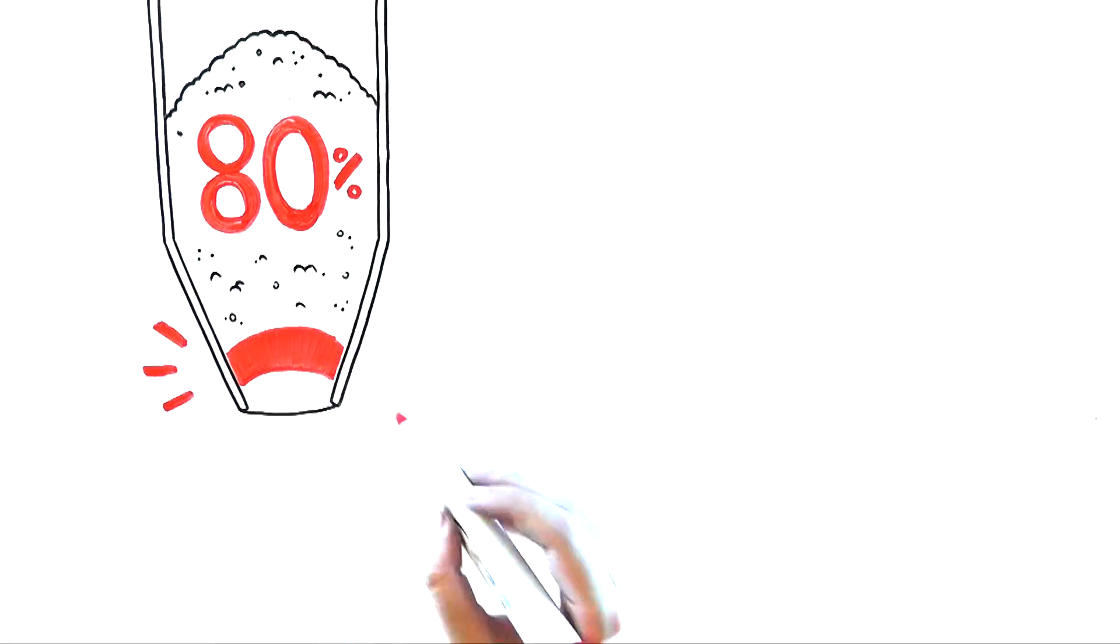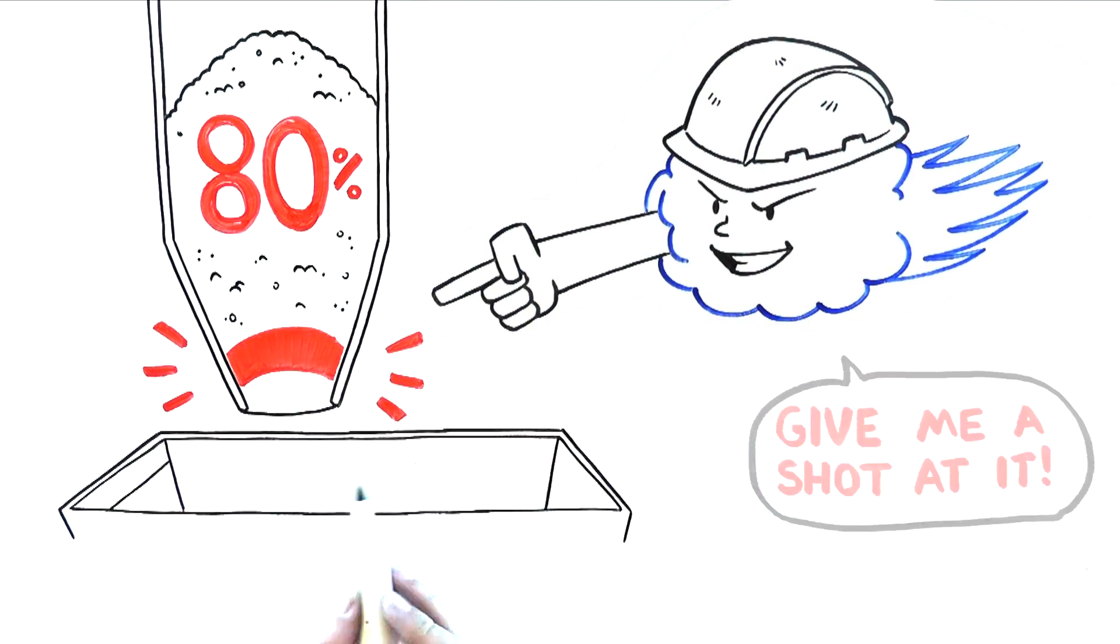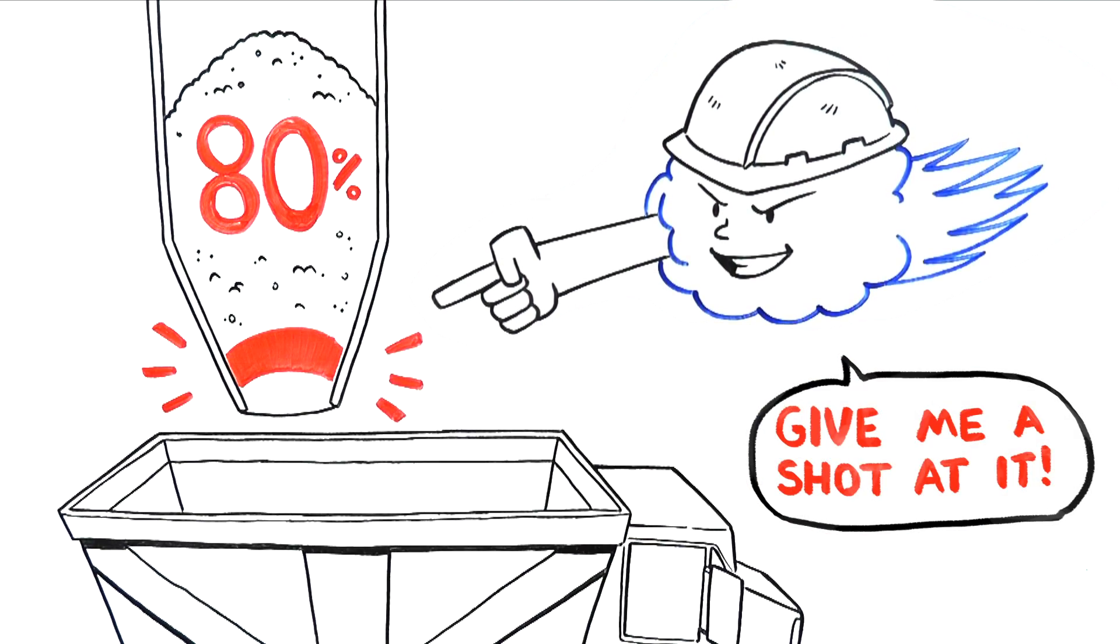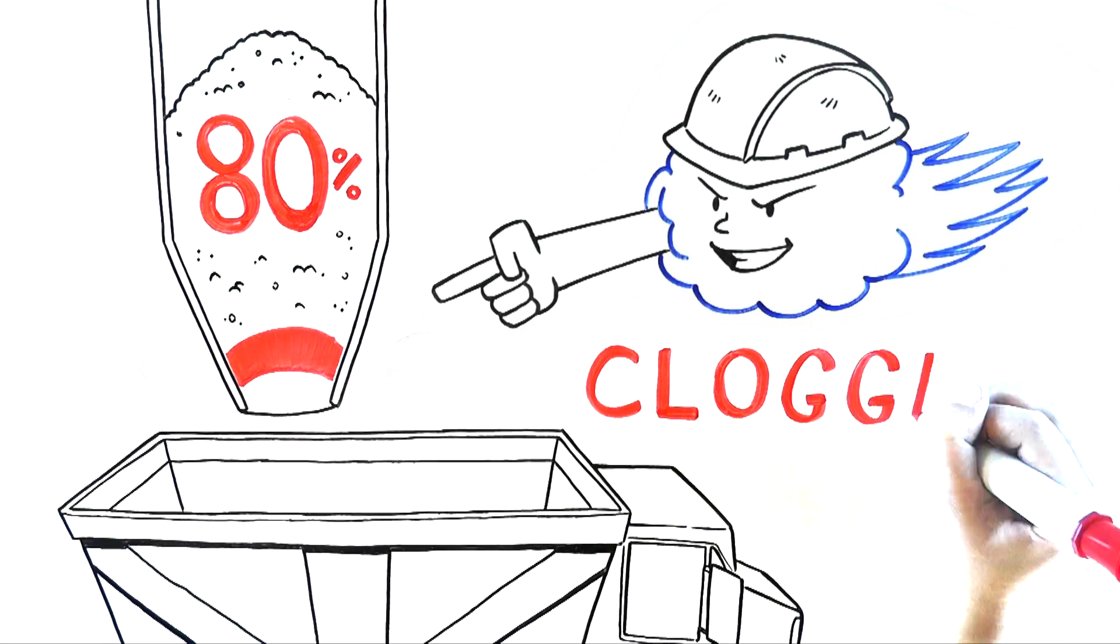A recent study found that 80% of storage vessels do not operate at capacity because they can't move the material fast enough. It gets clogged up.